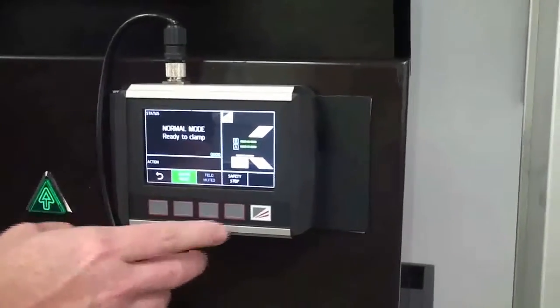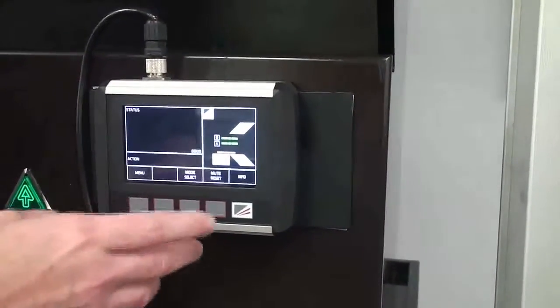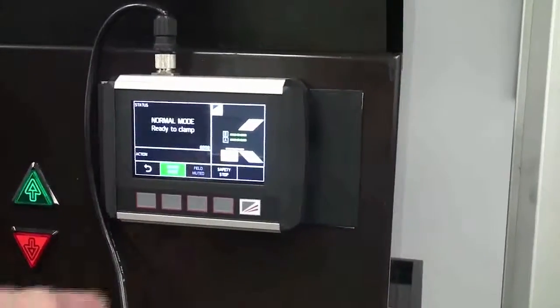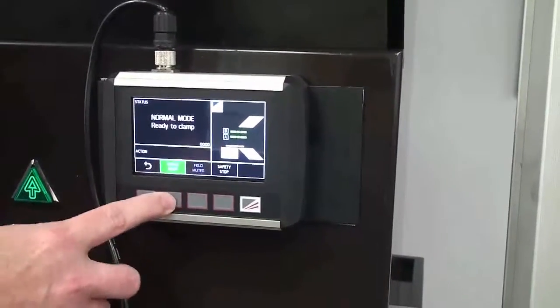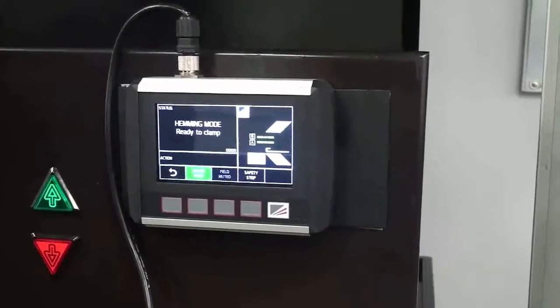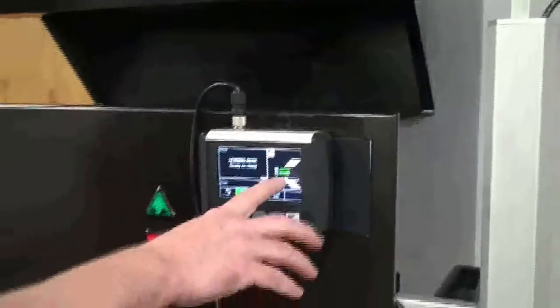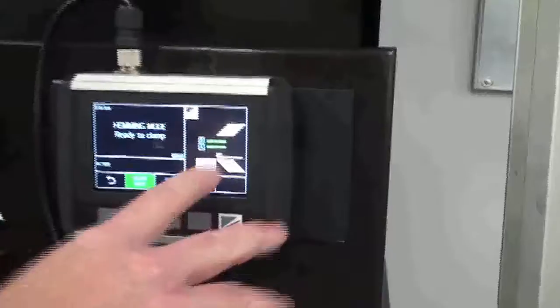I can go to mode select. Right now I'm in guard mode. And I can change that to hemming mode. Now I'm running in hemming mode. And it's indicated by this screen here. It shows me a hem.